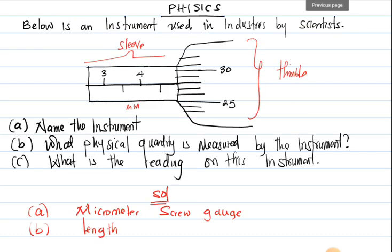For the thimble, we are going to get the reading from a line which is in the same line as this line from the sleeve. So just do this and check which line is in the same line as the line coming from here. So that is a line there.